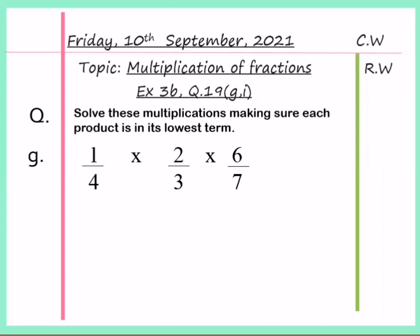According to the rule, multiply numerator by numerator and denominator by denominator. So, first of all, we will place an equals sign. Then multiply all numerators: 1 into 2 into 6. Then multiply denominators 4, 3 and 7.